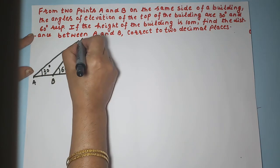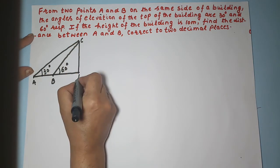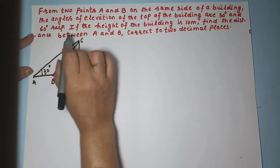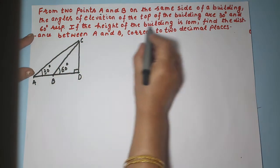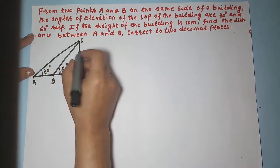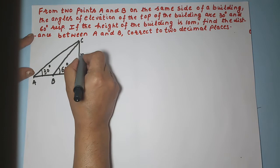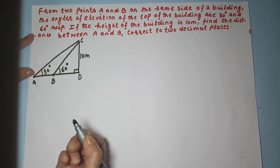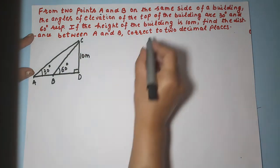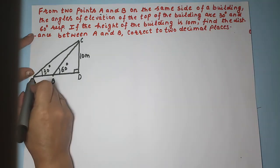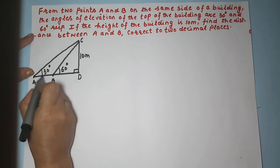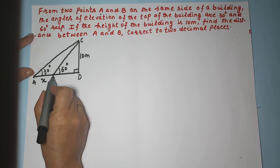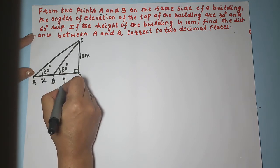Let us call the top of the building C, the base D, and this is 90 degrees. The height of the building is given as 10 meters, and we have to find the distance between A and B correct to two decimal places. Let us call this distance as X and BD as Y.